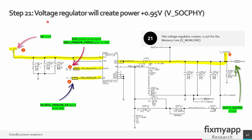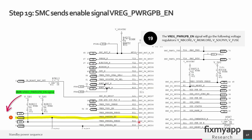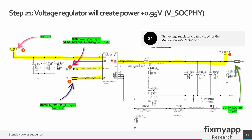In step 21 we create a power rail called SOC-PHY, a 0.95 volt rail created from the 3.3 volt power rail. We need an enable signal — the voltage regulator power good power B enable signal from the Southbridge — which goes to the enable pin. It starts generating 0.95 volt, and if successful the chip sends a power good signal called voltage regulator power good power B power good to the Southbridge.